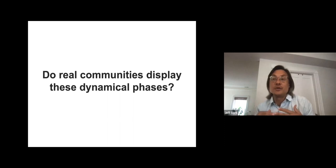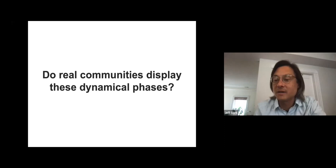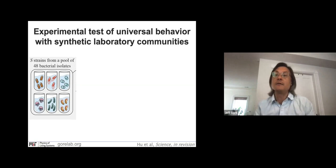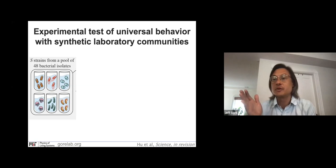Do real communities display these things? In principle, you'd like to go look at a community of fish on a coral reef and experimentally change the strength of interactions and number of species, but that's experimentally intractable. So what we are doing is using laboratory microcosms of bacterial species. We take 48 different bacterial isolates from a broad phylogenetic range and pick subsets of size S — anywhere from two, three, six, 12, 24, and also a 48-species community.